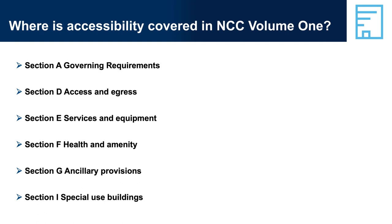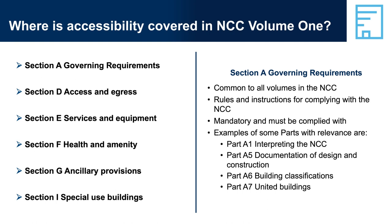The performance requirements represent minimum requirements. Building designers, owners and builders can choose to introduce additional or alternative measures to provide greater accessibility within a building and to its occupants — for example, a care home or day centre for people with disability. Section A, Governing Requirements, is common across the NCC and covers how to use and apply the NCC. The various parts of Section A can apply to accessibility.